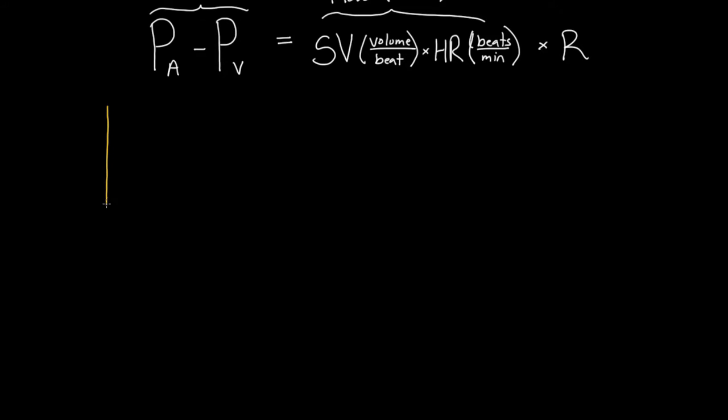So this is our pressure volume loop, let's say. I'm going to draw it nice and big so you can see everything clearly. And we have volume on the bottom axis going this way, and pressure on this axis going up, going higher as you go up. And this is, of course, from the left ventricle's perspective. So I'm just going to write LV here.